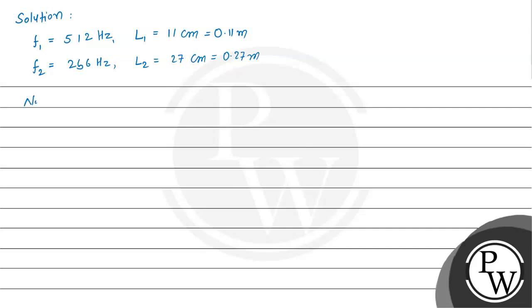Now we have to apply for the first case. So lambda 1 divided by 4 will be equal to L1 plus E, end correction, which is for the tuning fork.